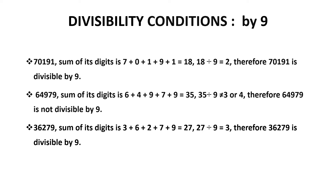The number 36,279 — what is the sum of its digits? 27. 27 can be divided by 9, therefore the number 36,279 is divisible by 9.